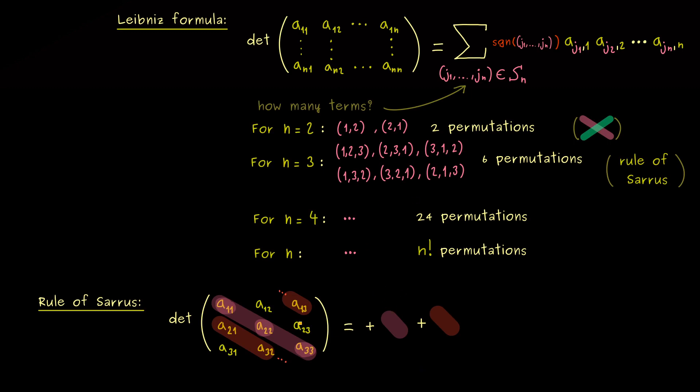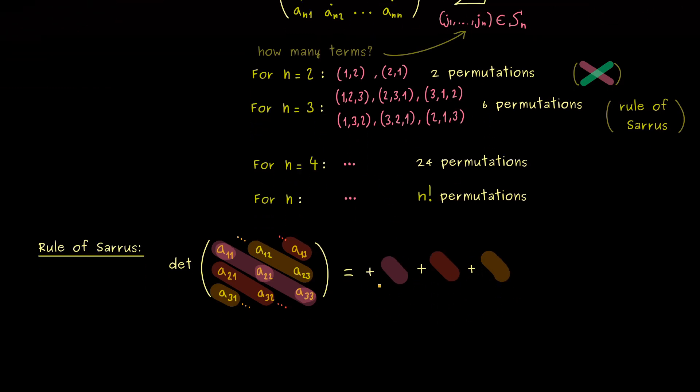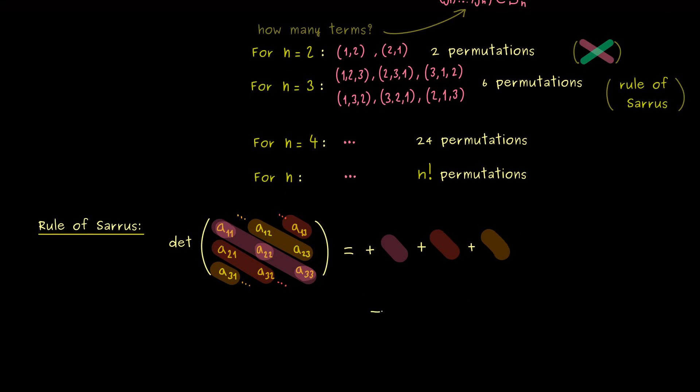And then the last even permutation is given by this last diagonal here. So you see, we also flip over to fill in the diagonal. It's an even permutation, so we have a plus sign again. Moreover, you also know we have 3 odd permutations, so 3 minus signs as well. So let's already write them here. And then the question is, how do we get them in this picture?